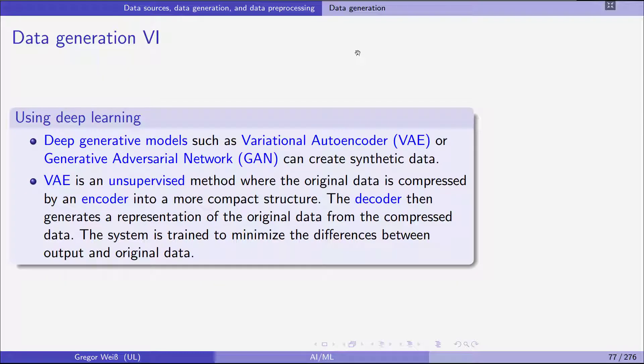And as a third method, we have deep learning. We'll later in this lecture see different methods from deep learning. I only want to mention two of these here. Deep generative models, such as variational autoencoder, VAE, or generative adversarial network, GAN. Now VAE is an unsupervised method, where the original data is first compressed by a so-called encoder into a more compact structure. And then the decoder generates a representation of the original data from the compressed data. And then the system is trained to minimize the differences between the output and the original data. As you can see from the word encoder, this is something that is also used in audio and visual compression.